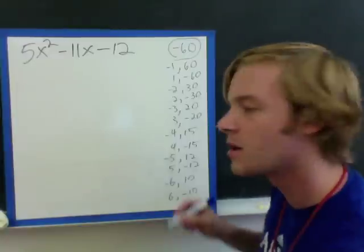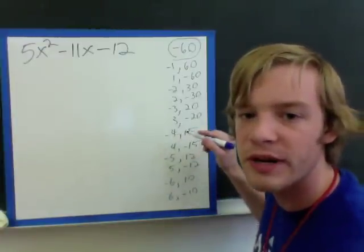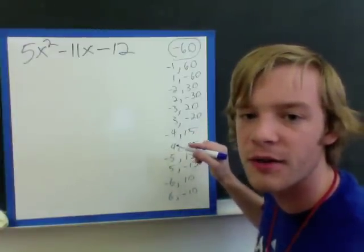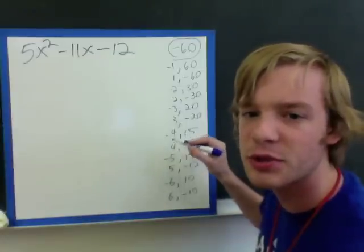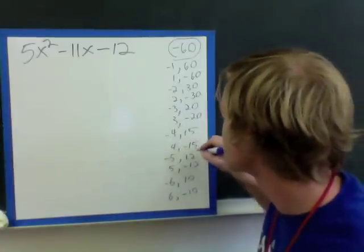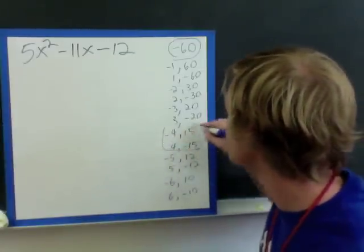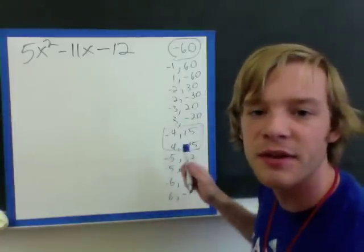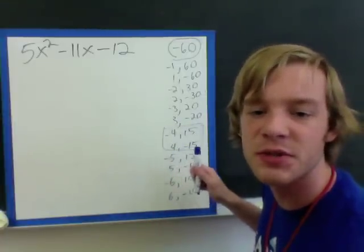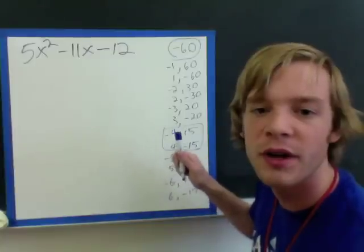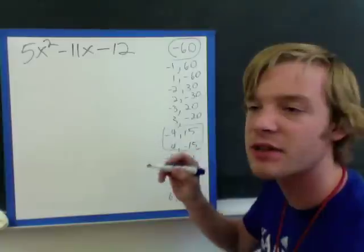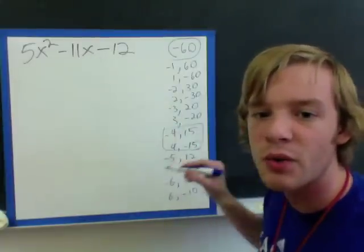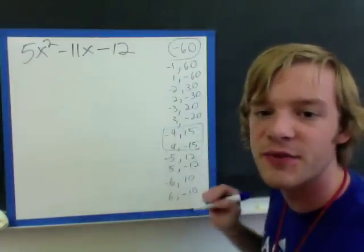And if we scan through these really quick, we see that 4 and negative 15, negative 4 and 15, and 4 and negative 15 are the pair that we should be looking at right here, and that 4 and negative 15 adds to negative 11, negative 4 and positive 15 add to a positive 11. So since we want a negative 11 like we have here in our problem, we want positive 4 and negative 15 as our pair.